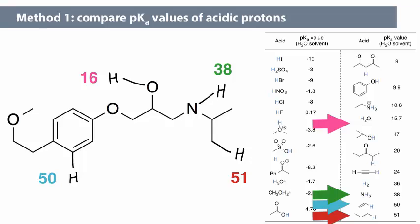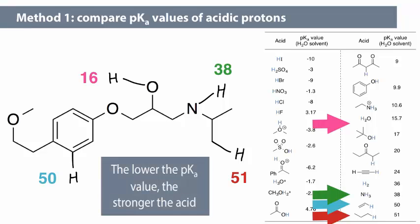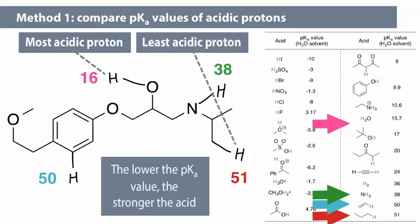You should refer back to the video on estimating pKa values if this is not easy for you to do. Remember, the lower the pKa value, the stronger the acid. Analogously, the higher the pKa value, the weaker the acid. We can conclude that the hydroxyl proton is the most acidic, and the alkyl proton is the least acidic.